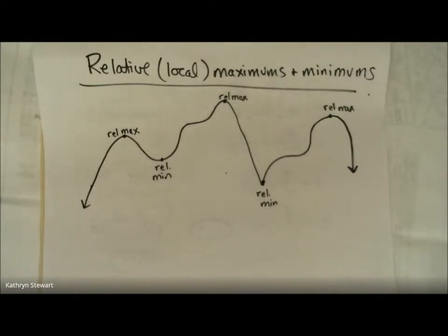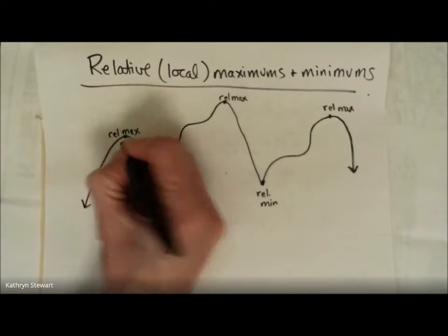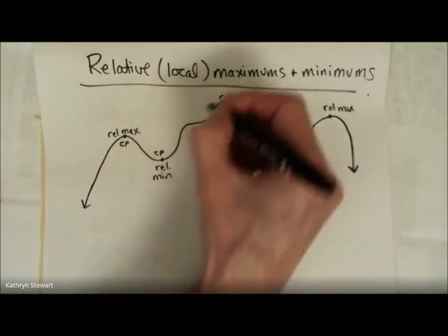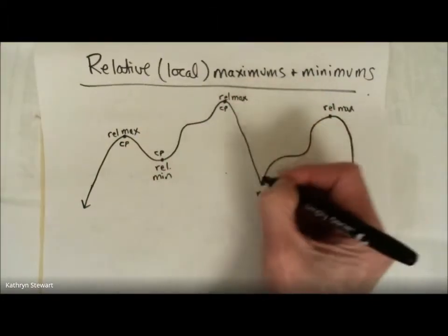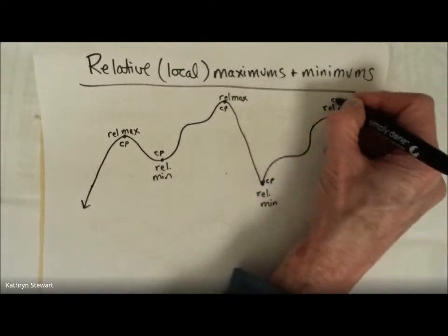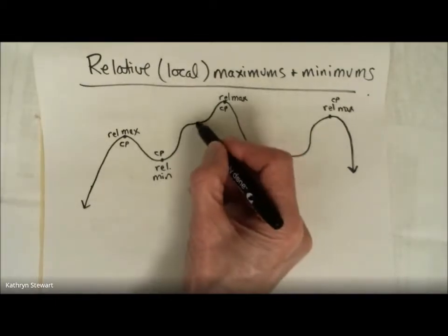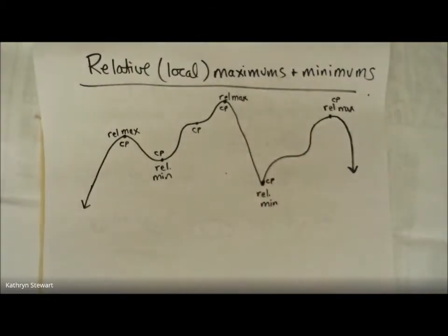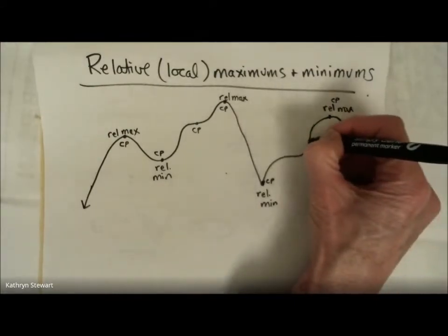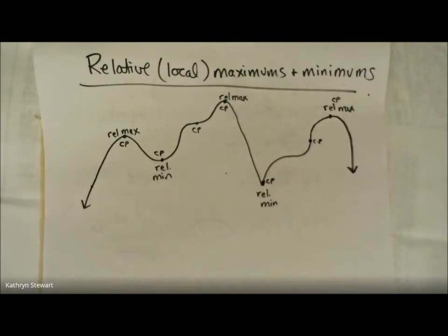Perhaps you discovered that these things happen at critical points. Each one of these points is a critical point — in other words, where the derivative of the function is zero or undefined. But that's not enough, because this might be a critical point where the slope might be zero for a moment, or undefined for a moment.